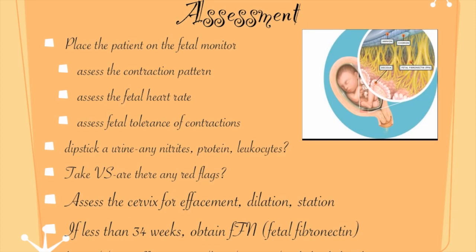You can ask the questions while you have the patient get into a labor bed, assuming you and the patient are face to face in labor and delivery. Take her vital signs — is there a fever present? Place her on the fetal monitor and assess the contraction pattern and fetal heart rate with variability and for distress. How is this fetus tolerating contractions? Palpate the abdomen — is there any tenderness, and how strong are the contractions? Obtain a clean catch urine and dipstick it for nitrites, protein, and leukocytes, as these indicate infection. If the membranes are not ruptured, assess the cervix for dilation, effacement, and station.